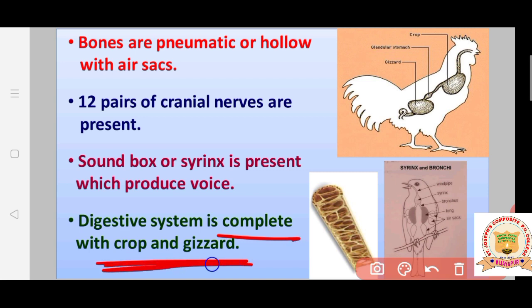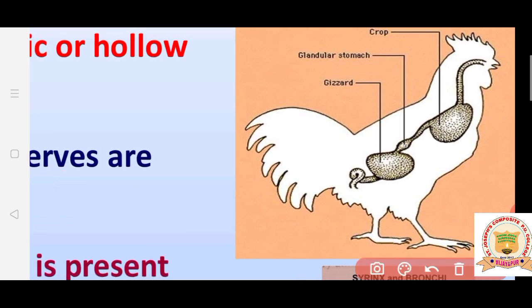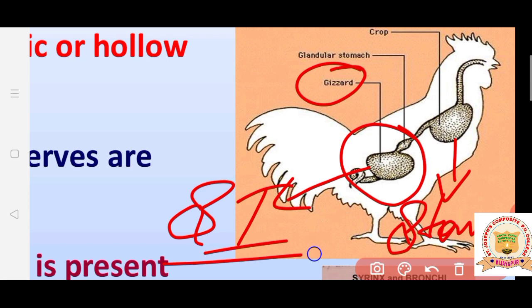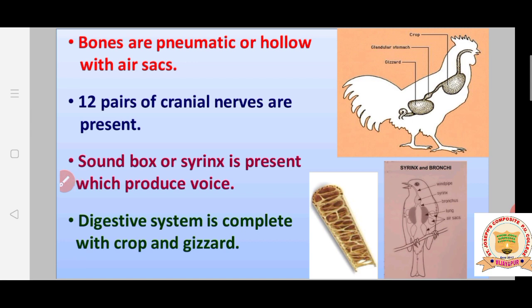The digestive system is complete with a crop and a gizzard. Instead of a stomach and small intestine, birds have a crop and a gizzard. The crop acts like the stomach — storing food — while the gizzard acts like the small intestine, helping in the digestion and grinding of food. You should remember these two important structures.